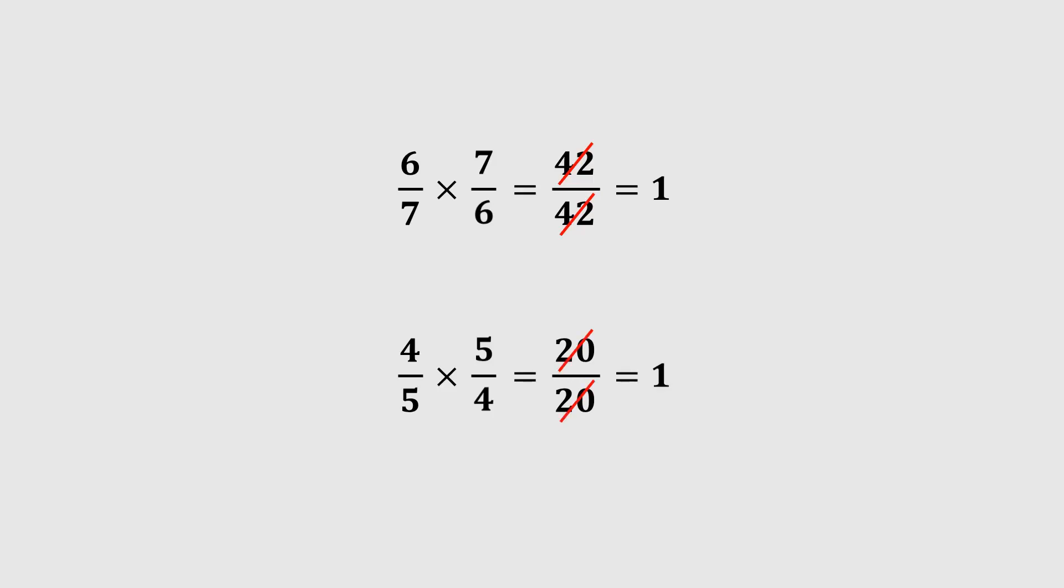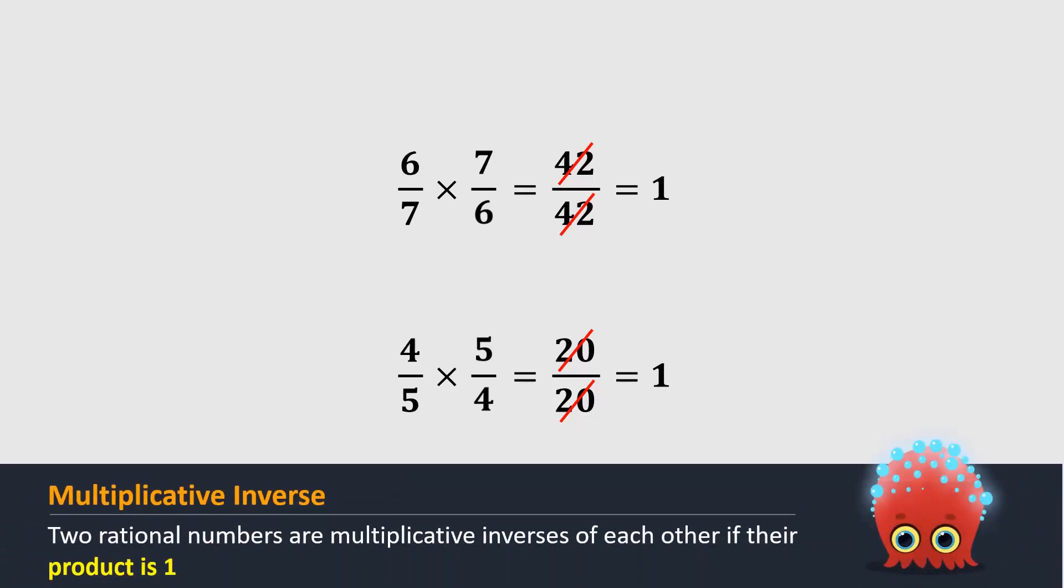In fact, this happens every time we turn a rational number upside down. Two rational numbers are multiplicative inverses of each other if their product is 1.